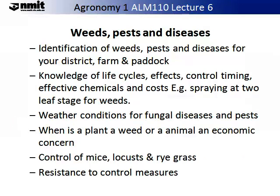It is often stated that weed, pest and disease control is perhaps the single biggest cost that farmers have to deal with. It is important to have a good idea of what the weeds, pests and diseases are for your district, your farm and your paddock. Accurate identification and early identification can greatly assist in the management of your weeds, pests and disease, and in the long run reduce costs and chemicals that you apply. It is absolutely essential that you know the life cycles of the crops that you are growing, as this affects control, timing, effective chemicals and costs.